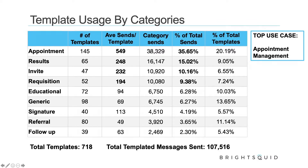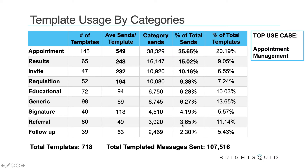Comparing percent of total sends to percent of total templates — if a category has a higher percentage of sends than templates, those templates are getting much more use. Educational and referral categories show a bigger gap, meaning those templates are used less frequently relative to how many exist. If you have questions, there is a question box in your GoToWebinar control panel. Feel free to type anything there and we'll address your questions at the end.